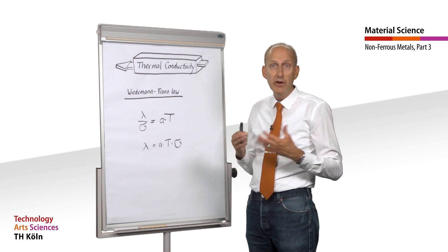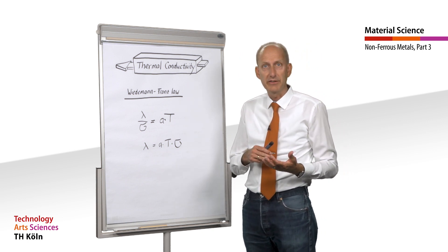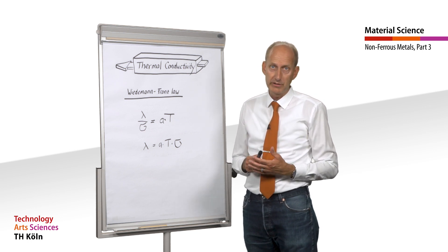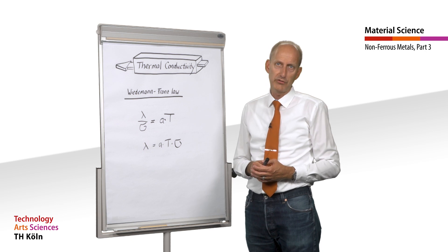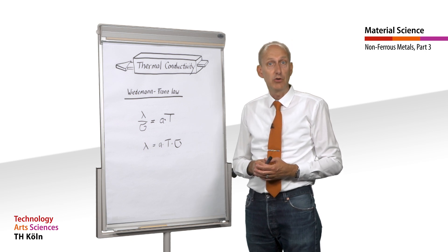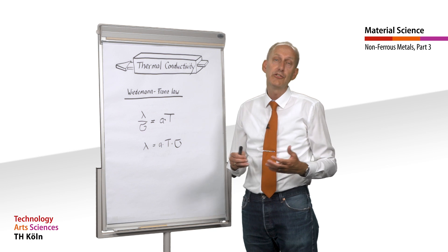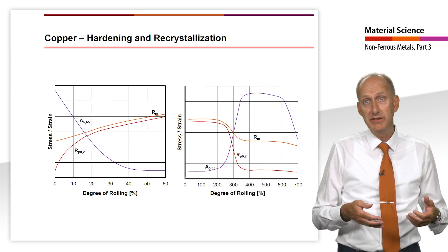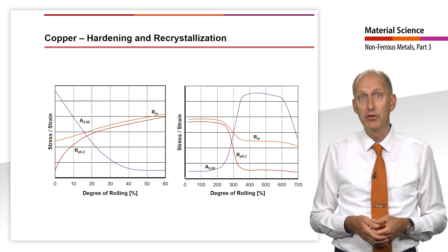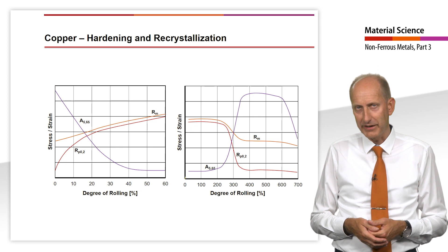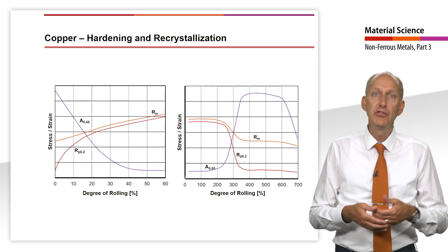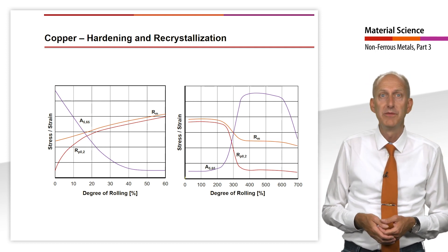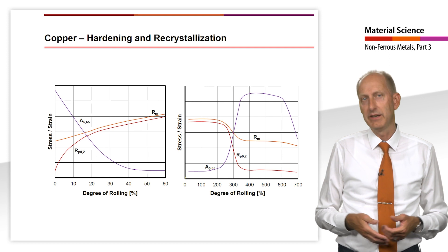Due to its very high thermal conductivity and high strength — at least compared to other materials with good thermal conductivity — copper is used for many heat transfer processes, such as in condensers, heat exchangers, preheaters, and coolers. In one of the first videos we talked about the possibility of strain hardening of copper in connection with one-dimensional lattice defects. However, due to the low recrystallization temperatures, the strain hardening achieved in copper is already cancelled at low annealing temperatures.